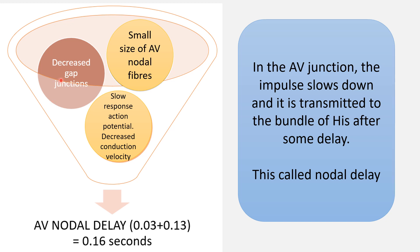The second point is the small size of AV nodal fibers. The third point is that the AV node is a type of pacemaker cell. The SA node and AV node are pacemaker cells, and their pacemaker action potentials are slow response action potentials. At the level of the AV node, this slow response action potential leads to decreased conduction velocity. These are the three reasons why AV nodal delay exists.